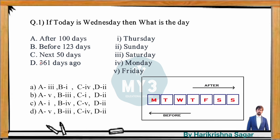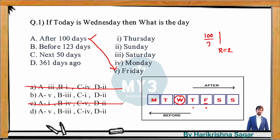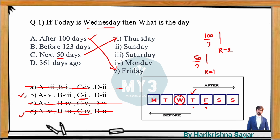Now let's look at the original match-the-following question. Today is Wednesday. What is the day after 100 days? 100 divided by 7 gives remainder 2, so move forward 2 days from Wednesday — the answer is Friday, which corresponds to option 5. For option C — after next 50 days: 50 divided by 7 gives remainder 1. Move forward 1 day from Wednesday, giving Thursday, which must connect to option 1. Checking the matching, the answer is option B.